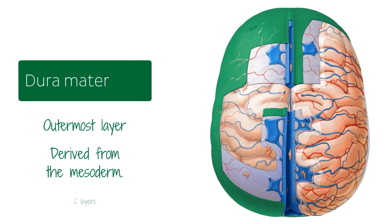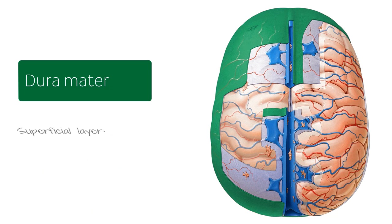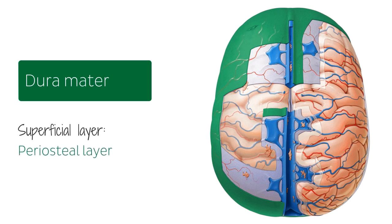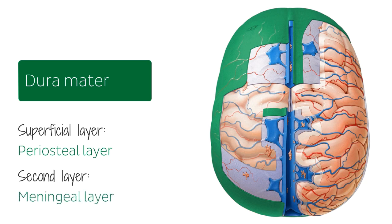The cranial and vertebral dura mater has two layers. The first, or superficial, layer forms the skull's periosteum and is known as the periosteal layer. The second layer forms the supporting capsule of the brain and is known as the meningeal layer.